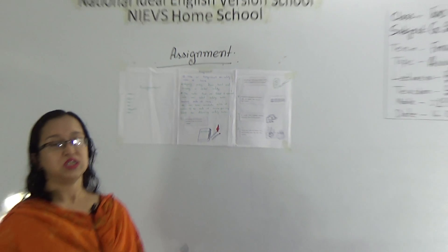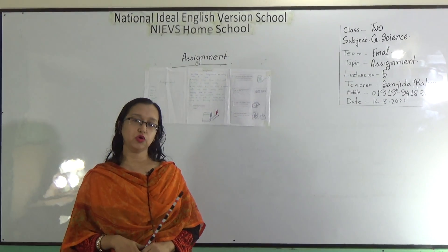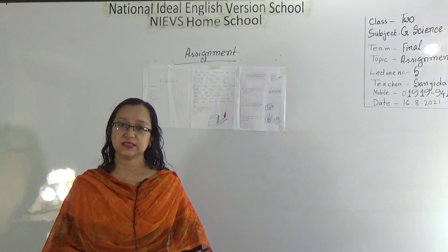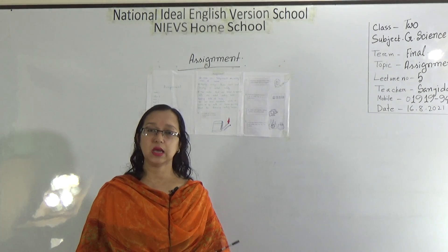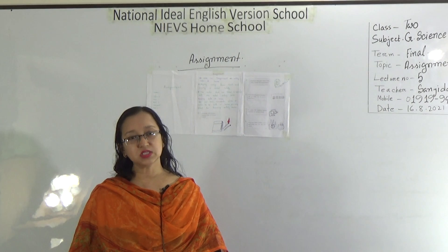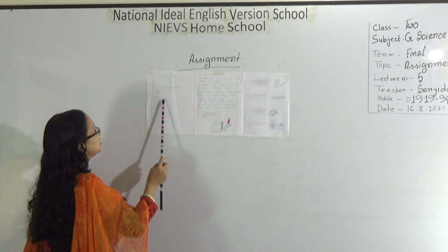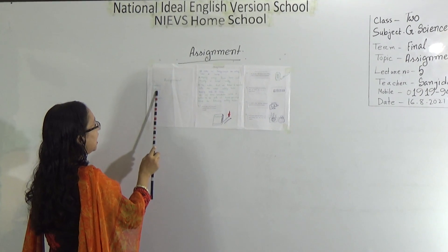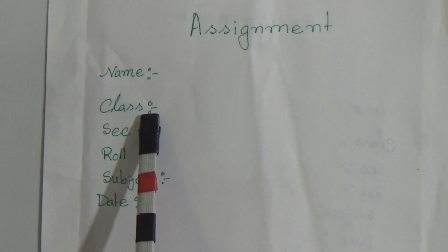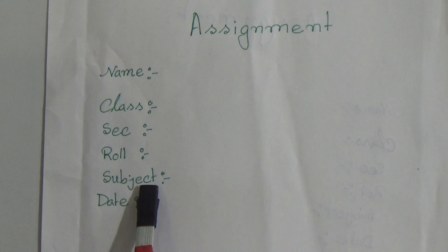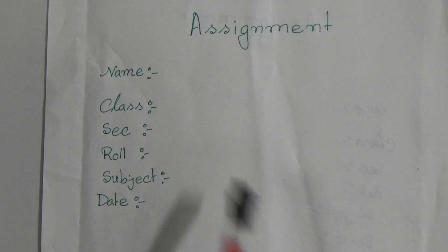That means, what are the safety rules that we must follow at our home. For doing this assignment, you will prepare a cover page. In the first cover page, you will write your name, class, section, roll number, subject, and date. This is the cover page of your assignment. Here is the assignment name, class, section, roll, subject, and date. After preparing this cover page, then you will do the assignment.